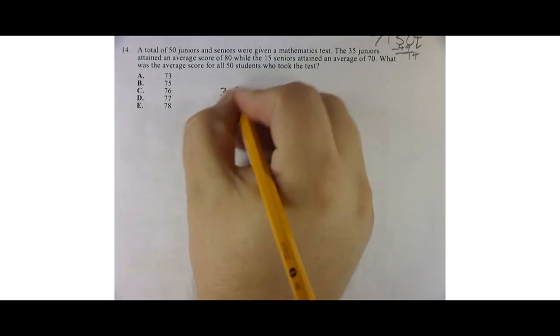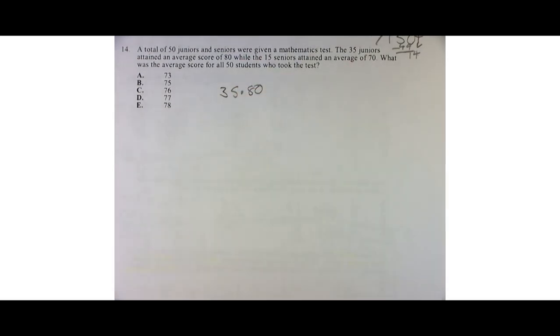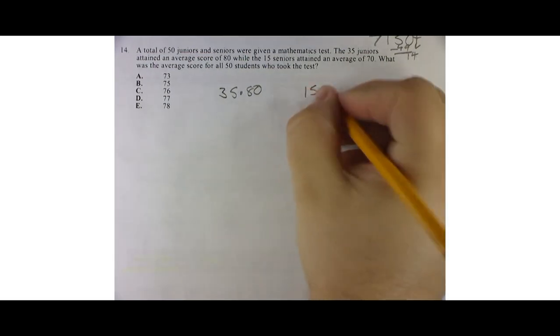Problem number 14. We are told that a total of 50 juniors and seniors were given a mathematics test. 35 juniors obtained a score of 80, so we have 35 juniors times 80. And 15 seniors obtained a score of 70, so we have 15 times 70.